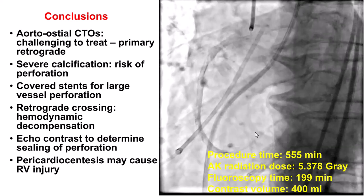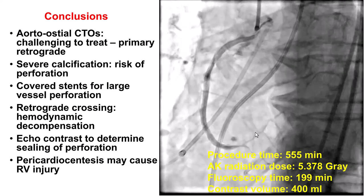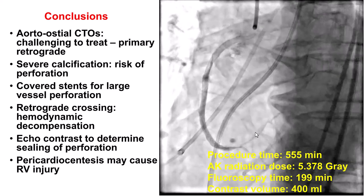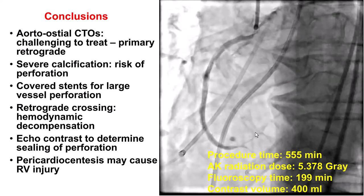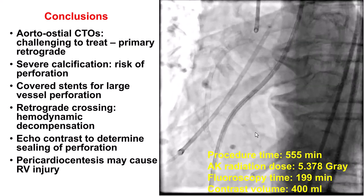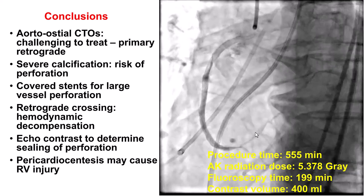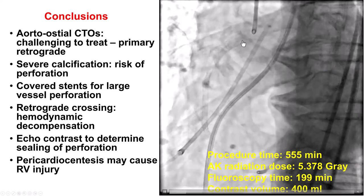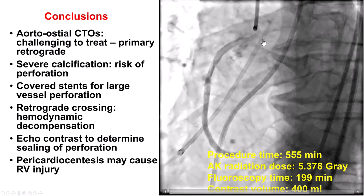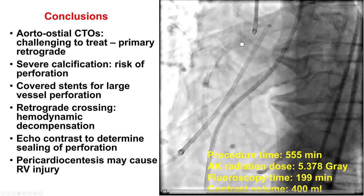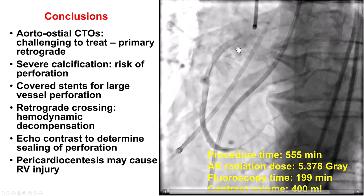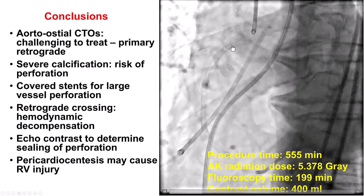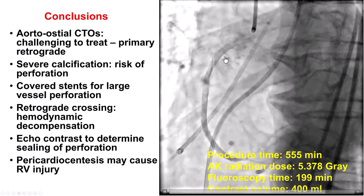There are several lessons from this case. First, aorto-ostial CTOs can be challenging to treat and often require a primary retrograde approach, as in our case, because we often cannot engage the RCA — it's hard to know exactly where the ostium of the vessel is. We had a lot of difficulty after getting the retrograde guidewire to the ostium; we could not puncture retrograde. We finally were able to get antegrade, and in the process we likely lacerated one of the small branches of the RCA, causing the pericardial effusion and bleeding — which did not become apparent until after stenting.